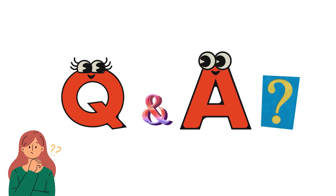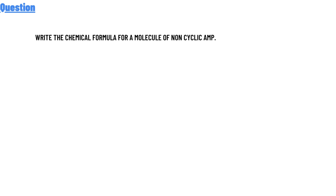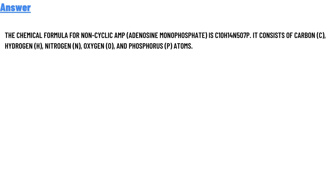Our today's question is: what is the chemical formula for molecules of nucleotides? The correct answer is the chemical formula for nucleotides — adenosine monophosphate — is C10H14N5O7P. It consists of carbon (C), hydrogen (H), nitrogen (N), oxygen (O), and the phosphorus (P) atom.